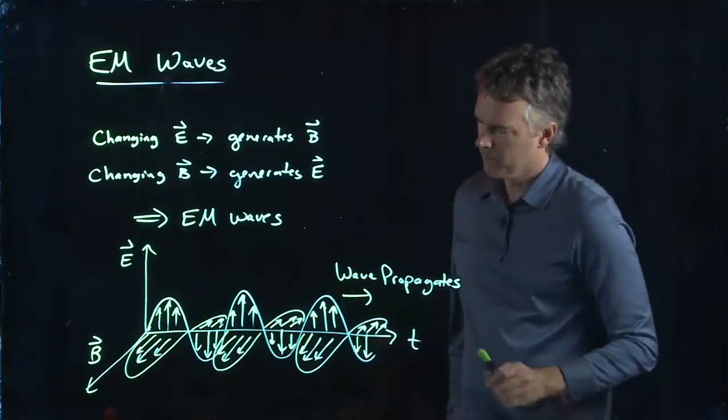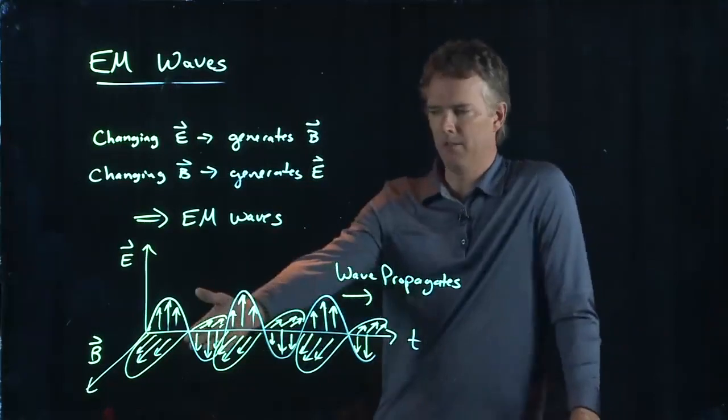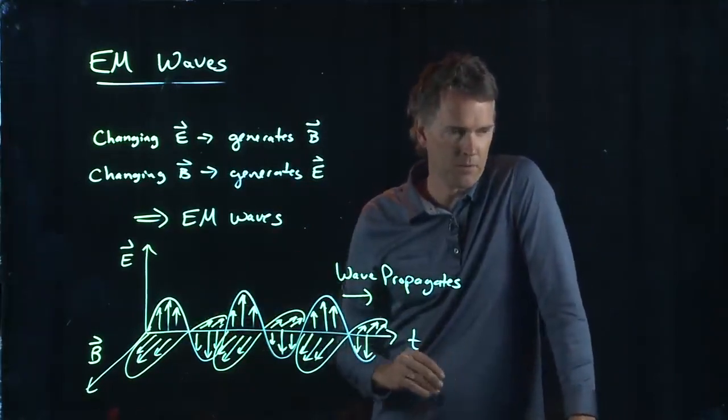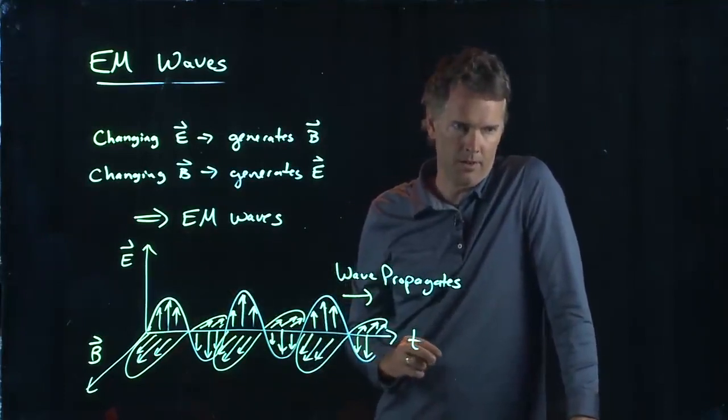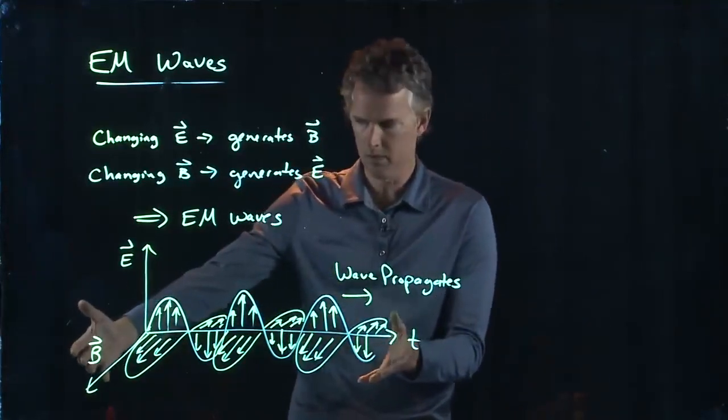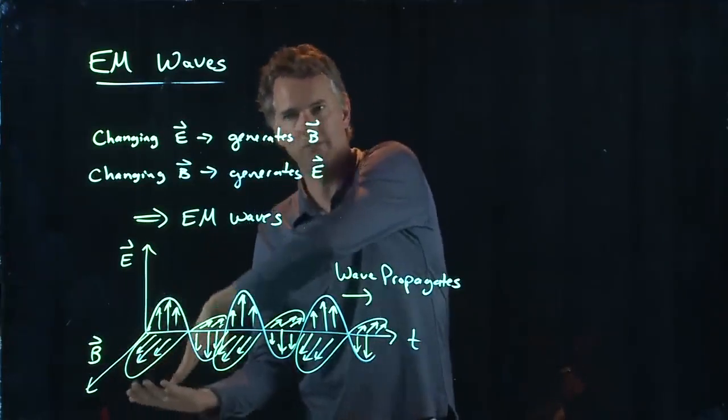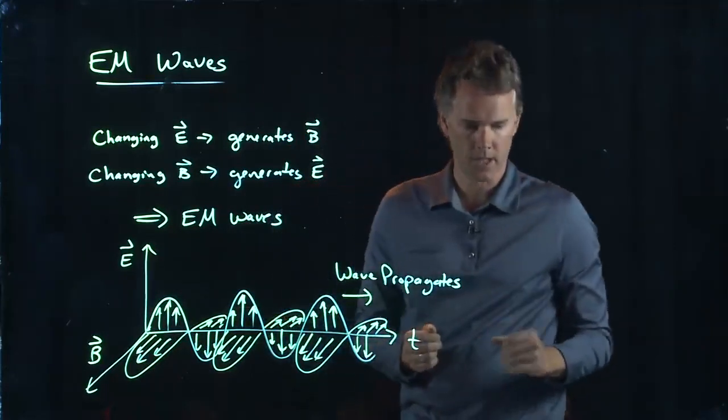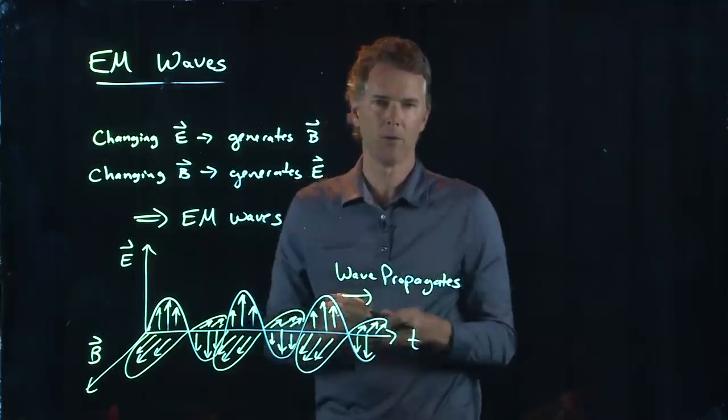So what is weird about this? What's weird is there's no charges anymore, no wires of current anymore. These things can just propagate on their own because the changing E field creates a B field, changing B field creates an E field, and they just keep going like that, sloshing back and forth. This is called an electromagnetic wave.